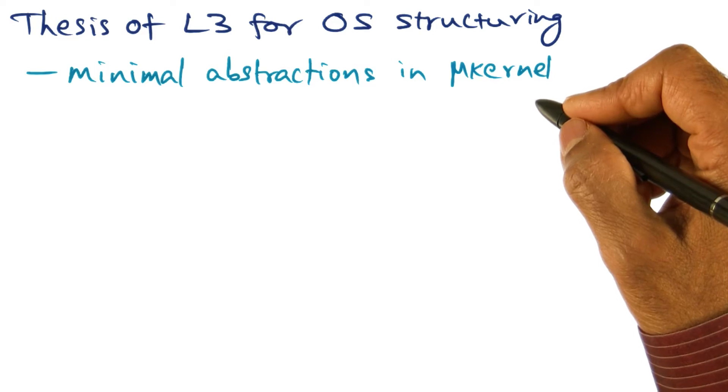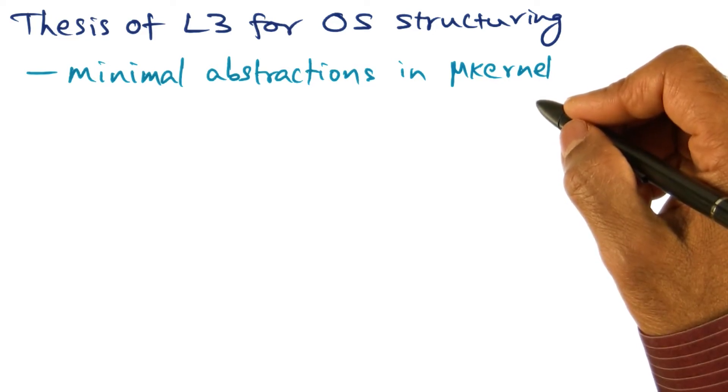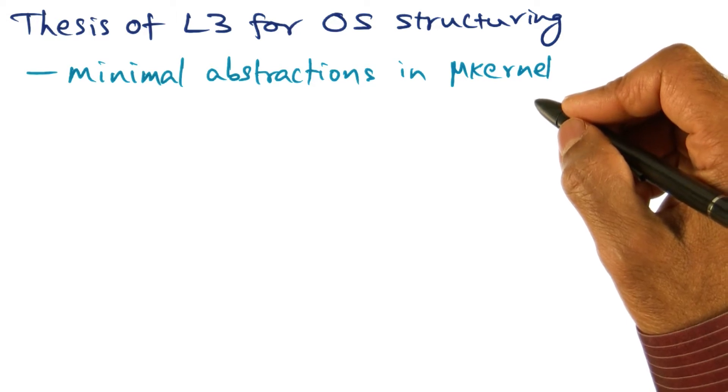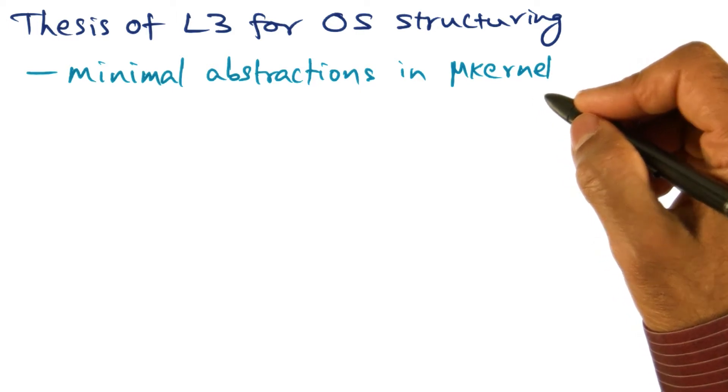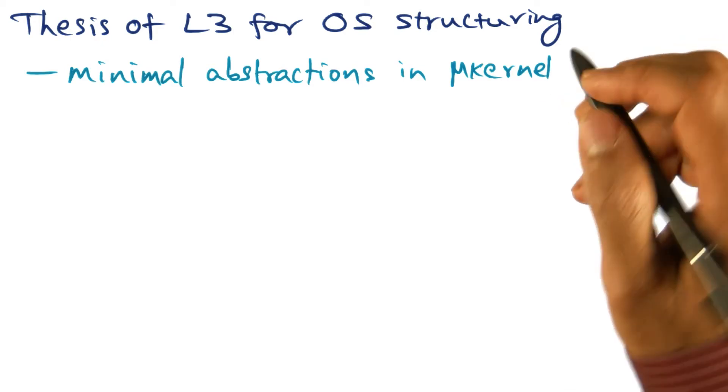are needed by any subsystem that provides functionality for end users in an operating system. Therefore, the principle of optimizing the common case suggests that these abstractions should be part of any microkernel.